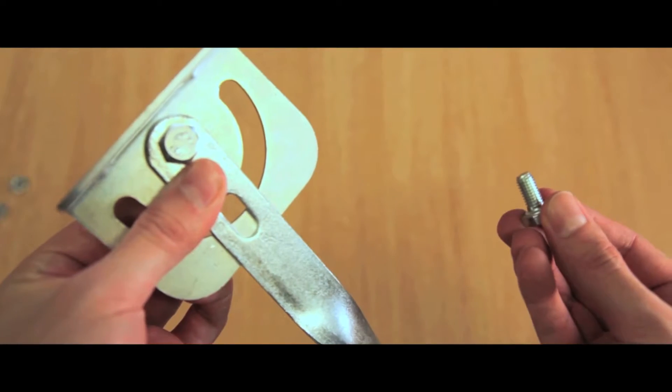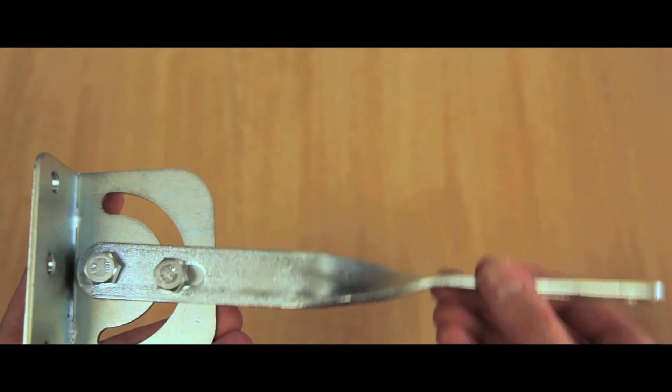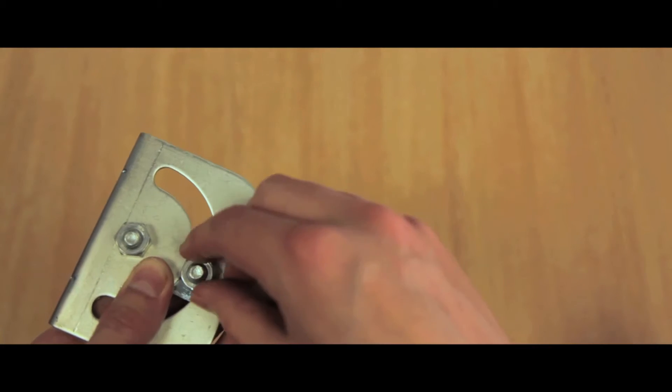Place the flat bracket and two M8 bolts onto the wall bracket. This will allow for positioning. Tighten using two M8 nuts.